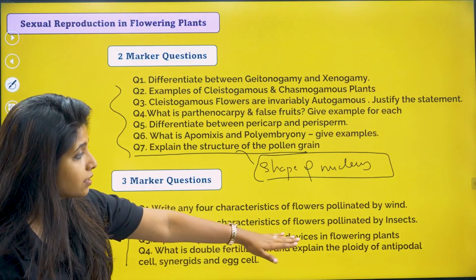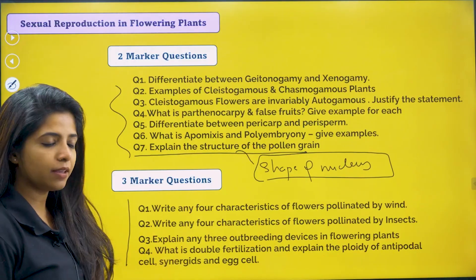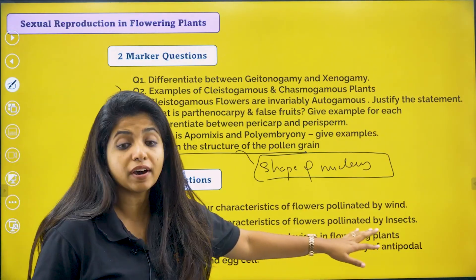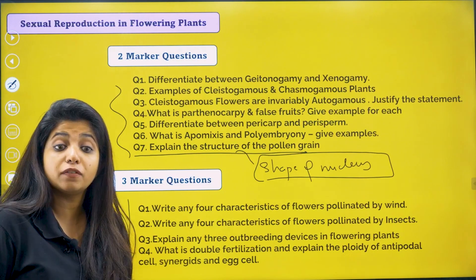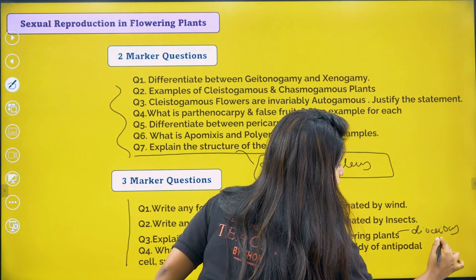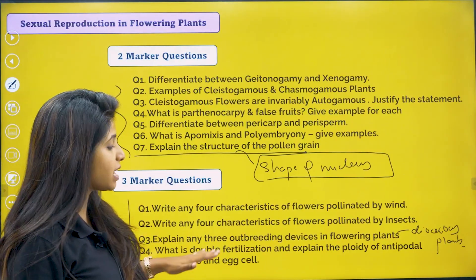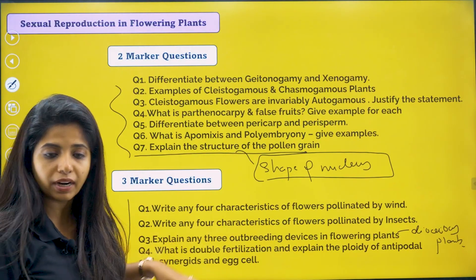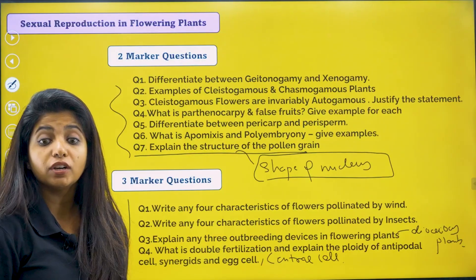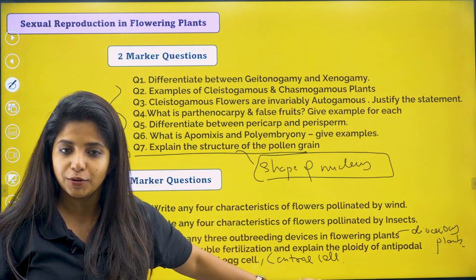Write any four characteristics of flowers pollinated by wind — you should know examples of wind-pollinated plants like grass and corn. Write any four characteristics of flowers pollinated by insects. Explain any three outbreeding devices in flowers — examples of dioecious and monoecious plants are really important. What is double fertilization? Explain the ploidy of antipodal cells, synergids, the egg cell, and the central cell. What is the ploidy of the nucleus that forms the perisperm? When you study this, you'll understand multiple interrelated concepts.